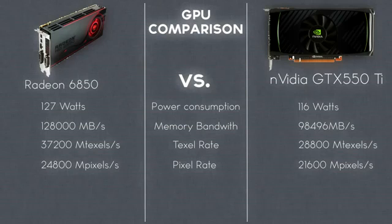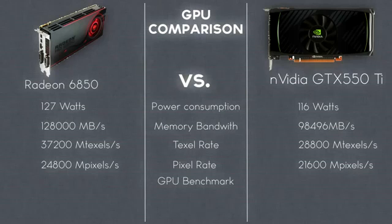When looking at third-party benchmarks, such as from videocardbenchmark.net, the 6850 has a score of 2751, while the GTX 550 Ti has only 1885.